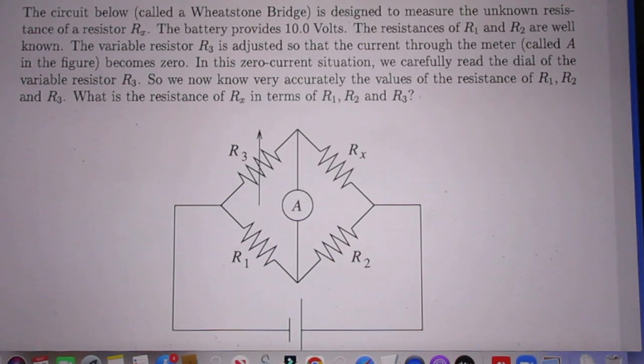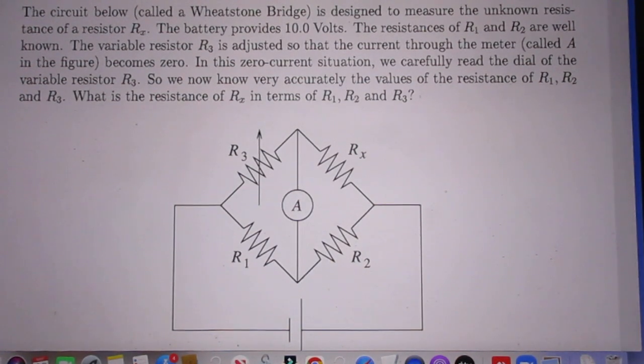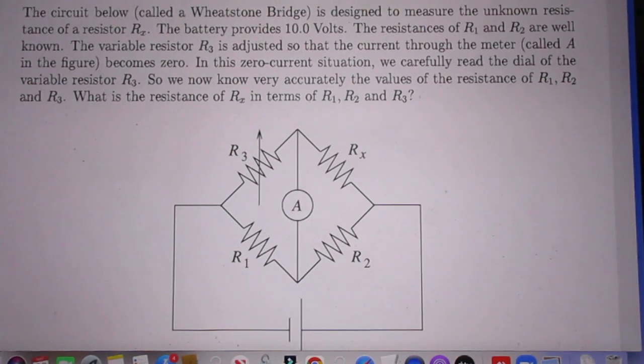The battery provides 10.0 volts. The resistance of R1 and R2 are well known. The variable resistor R3 is adjusted so that the current through the meter, called A in the figure, becomes zero.